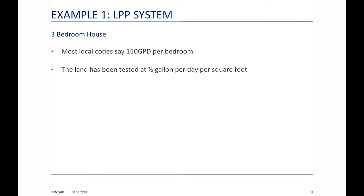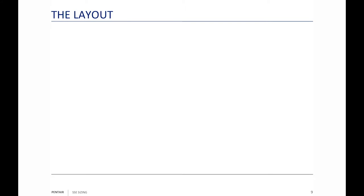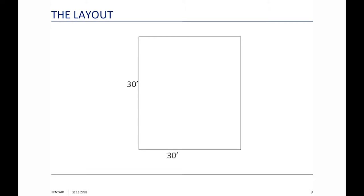The land has been tested at one-half gallon per day per square foot, so we can put half a gallon of effluent water per day per square foot into this leach field. At 150 gallons per day per bedroom with three bedrooms, that's 450 gallons per day we need to eliminate. 450 gallons per day divided by 0.5 gallon per square foot means our leach field has to be a minimum of 900 square feet.